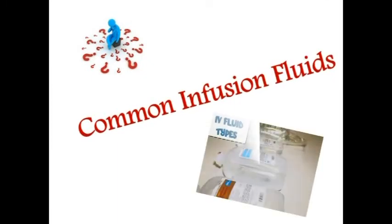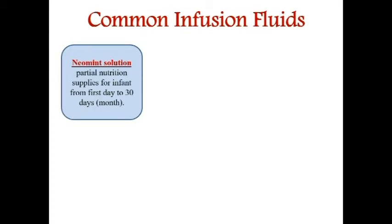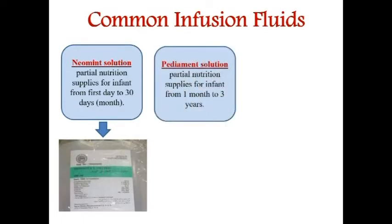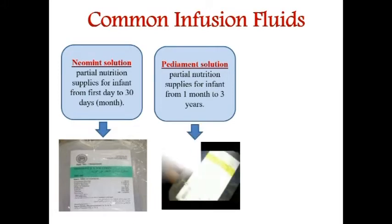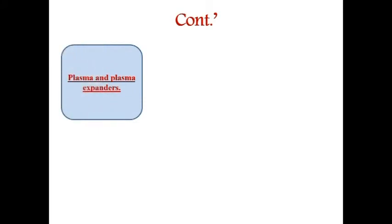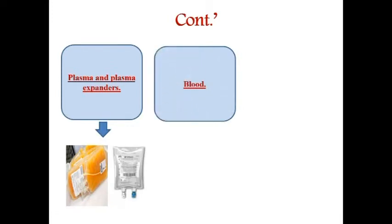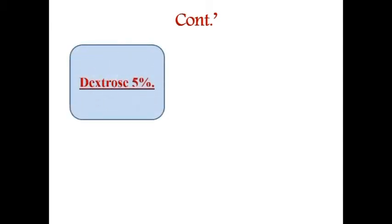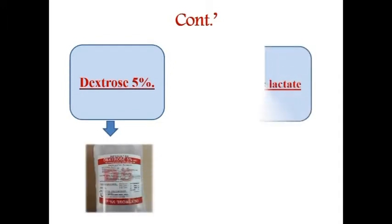Common infusion fluids used in pediatric patients: First, Neomint solution — partial nutrition for infants from day one to thirty days. Second, BDMN — partial nutrition for infants from one month to three years. Third, normal saline. Fourth, plasma and plasma expanders. Fifth, blood and blood products. Sixth, parenteral nutrition solutions, which vary depending on the disorder and child's age. Seventh, dextrose 5%. And finally, Ringer's lactate.